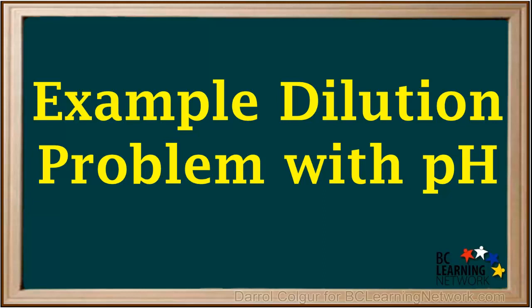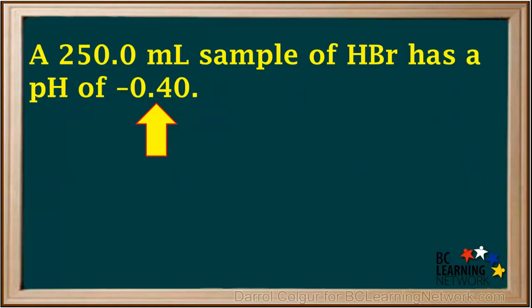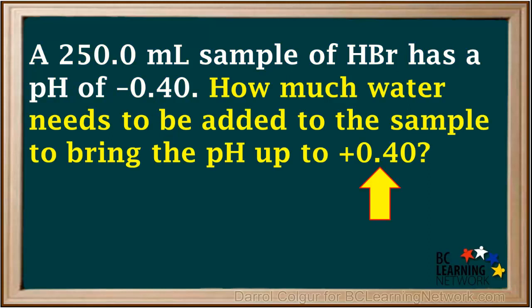Here's a problem that deals with diluting a solution to get a desired pH. We're given that a 250 milliliter sample of HBr has a pH of negative 0.4, and we're asked how much water needs to be added to the sample to bring the pH up to positive 0.4.